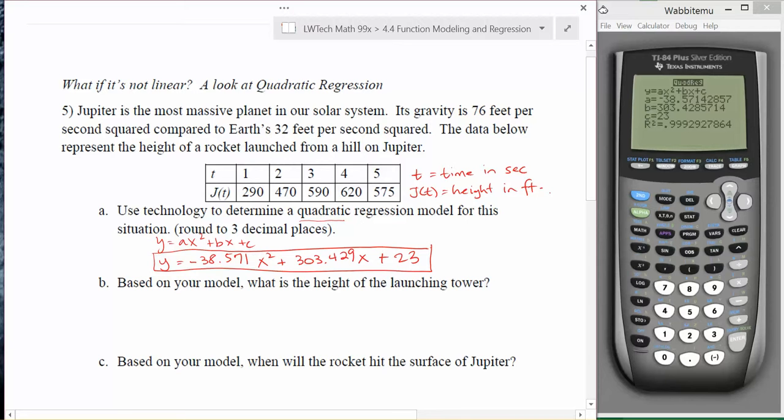Now once you have a quadratic equation model, we can use that to answer other questions about our situation. The first question asks, based on your model, what is the height of the launching tower? It may seem kind of strange to ask that, but remember, when was it that you started launching? We started launching when the time was equal to zero. Our time is our input, so that's where the x's are, and our height is the output, which is where our y's are. If we want to find the height of the launching tower, we're going to put t equals zero, or in our case, x equals zero to find the y. If we put zero in here for x squared and zero for x, all I'm left with is 23 feet. So the launching tower would have to be 23 feet tall.